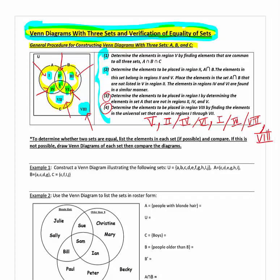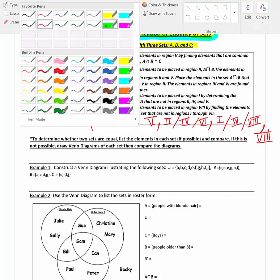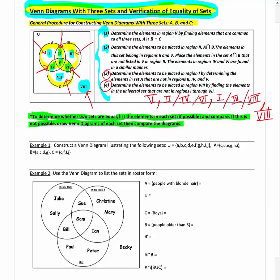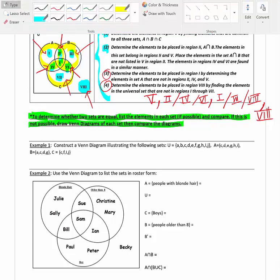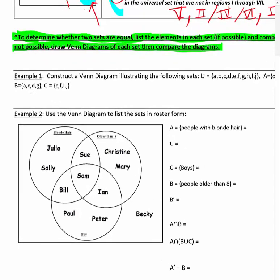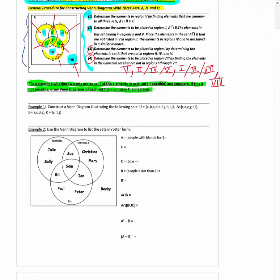We'll do a few examples where we try to draw a Venn diagram of three sets. But later on we'll also determine whether two sets are equal — that's what the title of this section talks about. We'll list the elements in each set if possible and compare. If that's not possible, we'll draw the Venn diagrams of each set and compare the diagrams — kind of two methods. If you can explicitly write out the elements, just write them out and compare; otherwise draw Venn diagrams. First let's focus on how to fill in a Venn diagram with three sets.